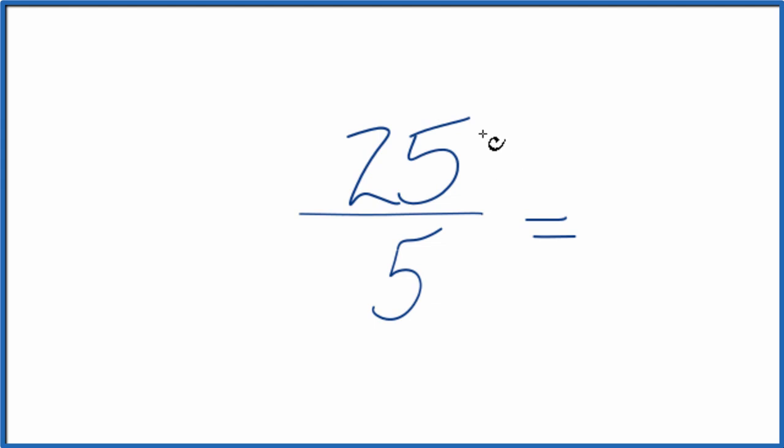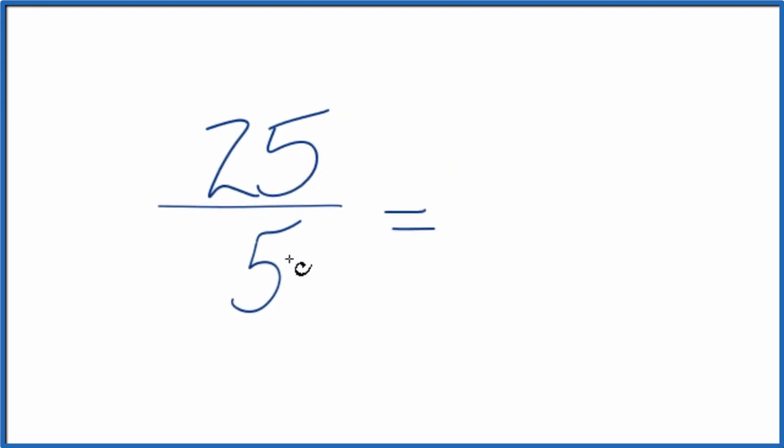To do that, we need to find a common factor, something that goes into 25 and 5 evenly. It looks like 5 would go into 25 and 5.